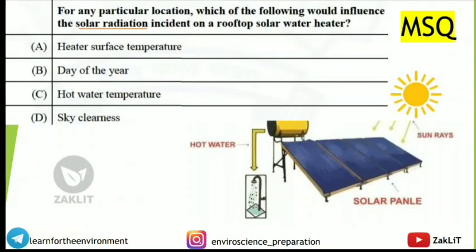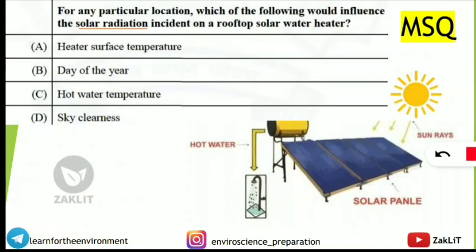Today's first question is on your screen. Everywhere I have written MSQ — that means multiple select question — where one or more than one options can be correct. The question is: for any particular location, which of the following would influence the solar radiation incident on a rooftop solar water heater? We all know what a rooftop solar water heater is — there is an image on screen if you need a reference.